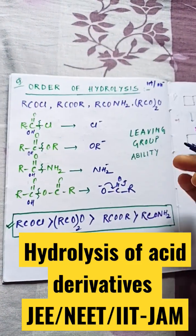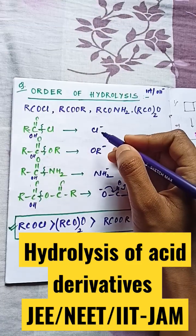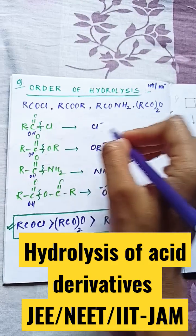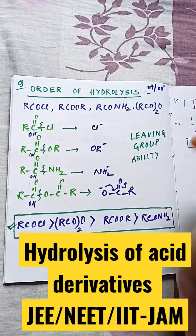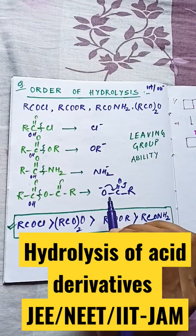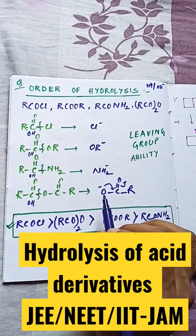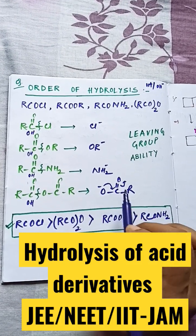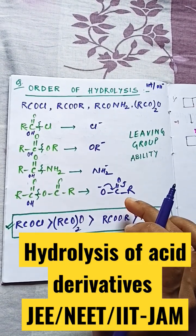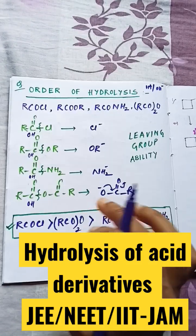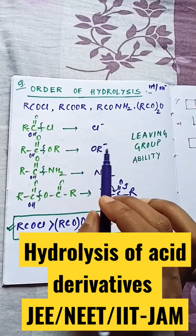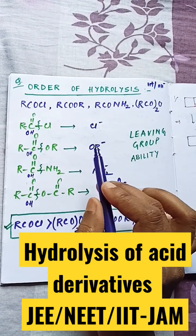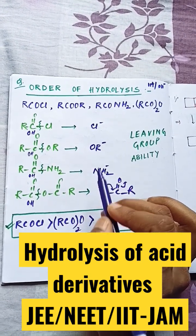Chloride is a very good leaving group, so it will leave easily. Next will be RCO⁻ because it is highly resonance stabilized, so it will leave second. Then you have to find where the negative charge is more stable — on oxygen or nitrogen.